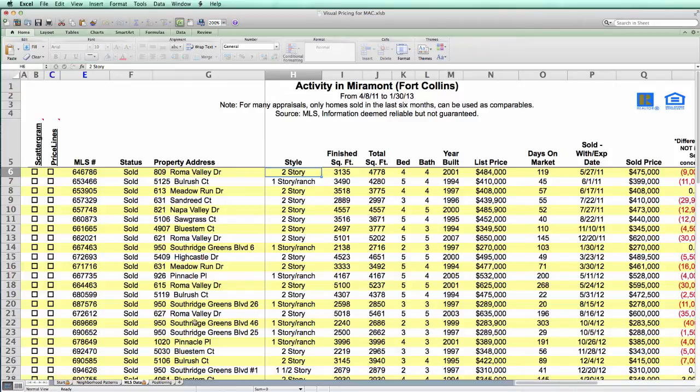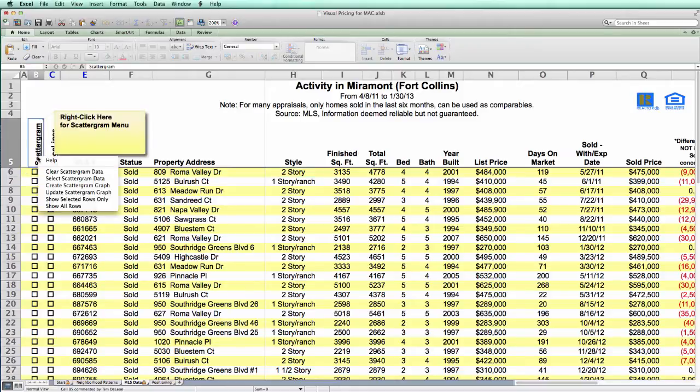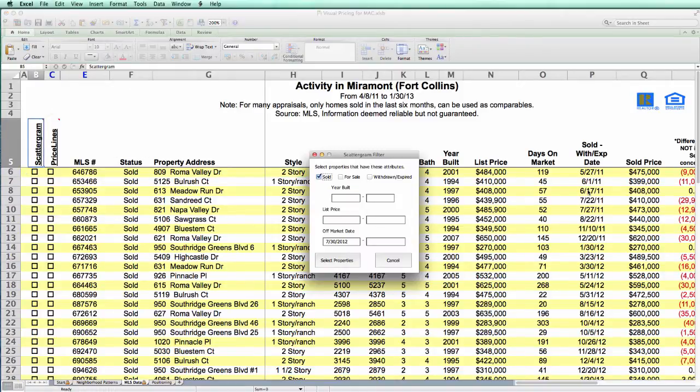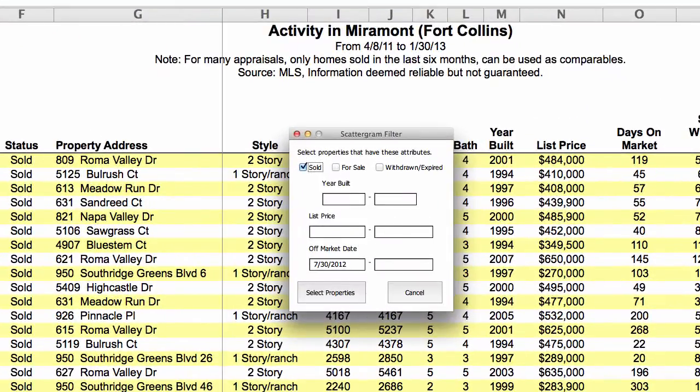So let's select data to put on our scattergram. We'll just use the select scattergram data dialog box. Of course the default is to select all the sold activity that has sold in the last six months. Now it turns out in this area the market is very seasonal, so if we just looked at data in the last six months we wouldn't have much to see. So for this example we'll look at all activity for the last year.